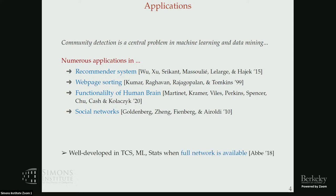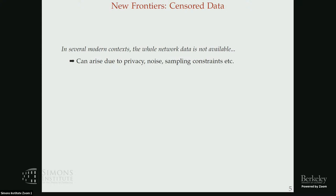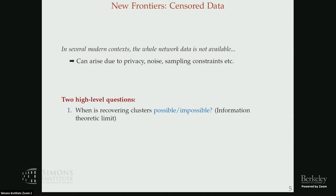It is now a well-developed field, but most of the literature is in the context where you have full information about the network available. However, in practice that is often not the case. We often have censored data in modern contexts, which can arise due to reasons like privacy and noise, and in many cases we only observe the network through some sampling procedure, giving us only a partial observation.